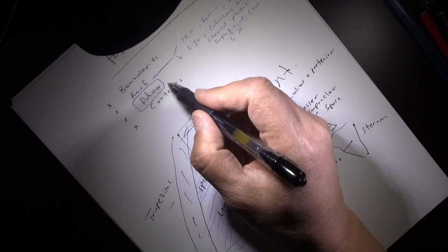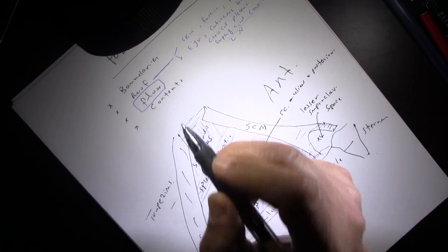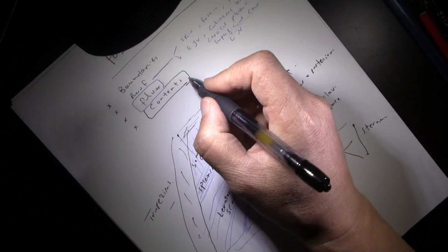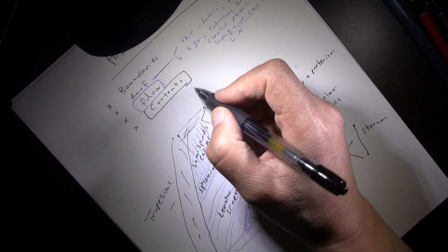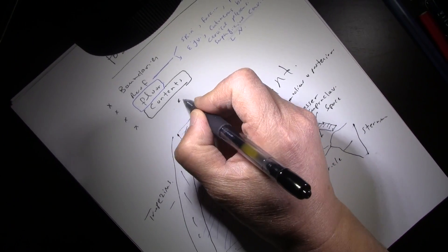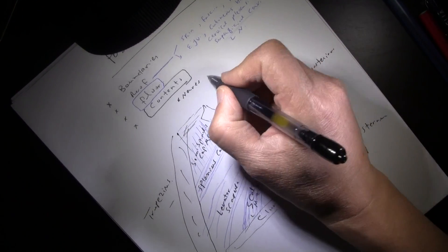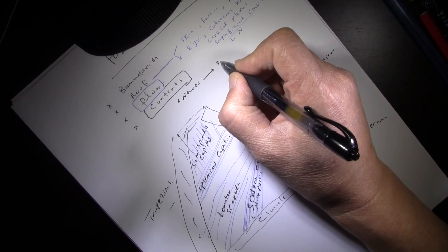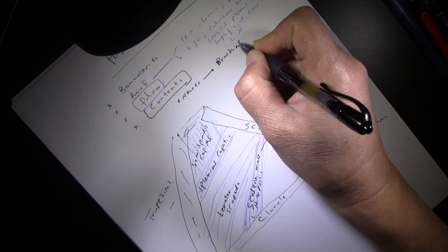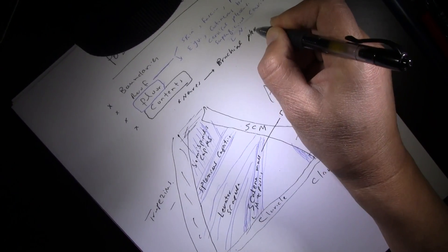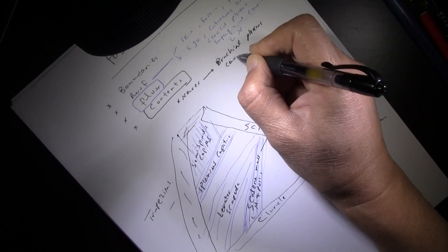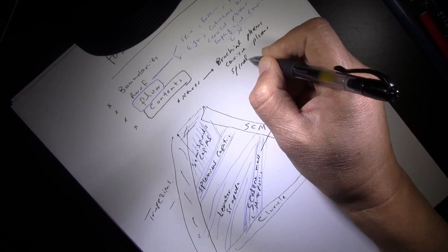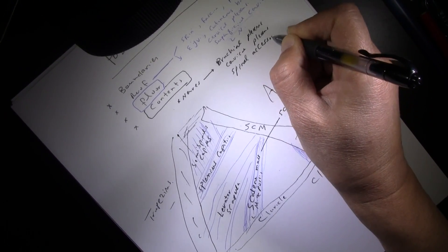Now for the contents of the posterior triangle. The nerves present include the brachial plexus, the cervical plexus, and the spinal accessory nerve. These are the major nerves found in this triangle.